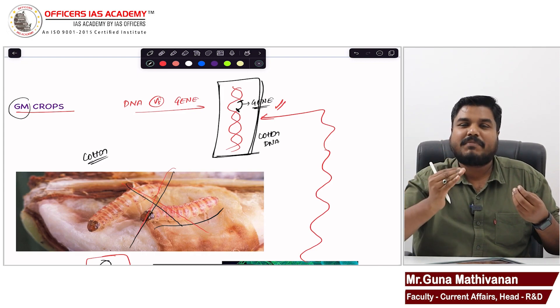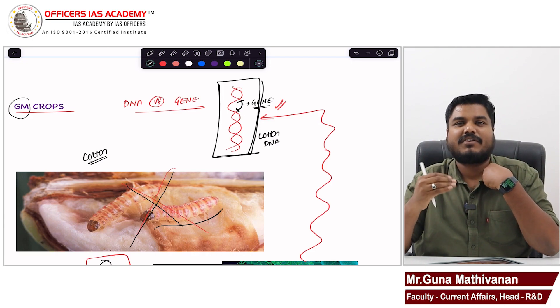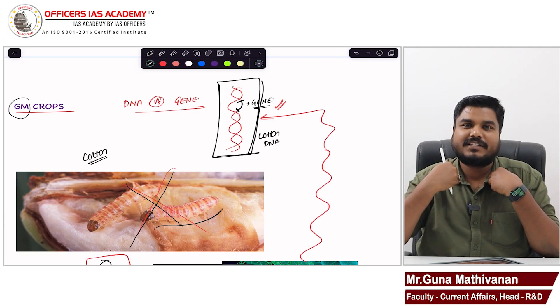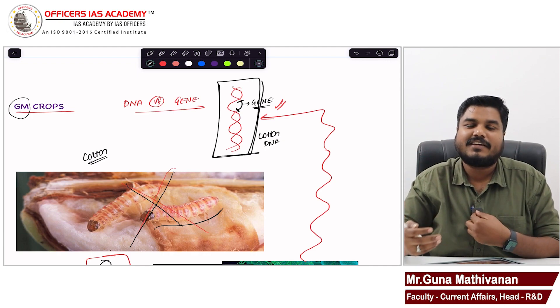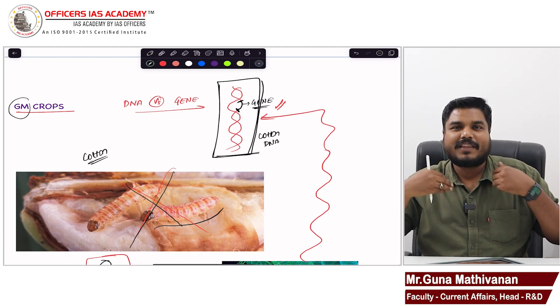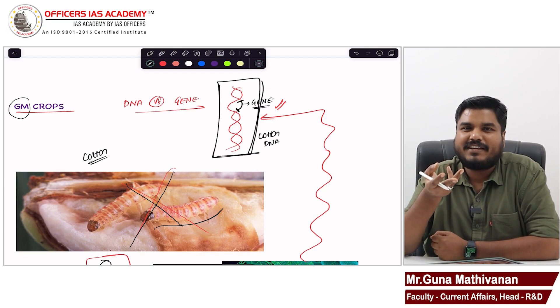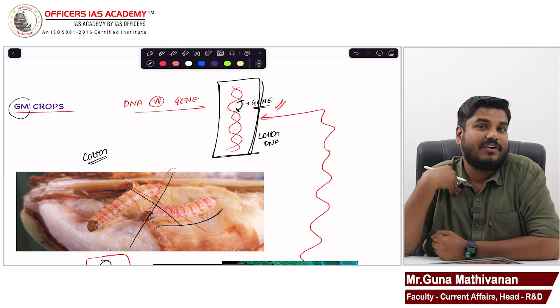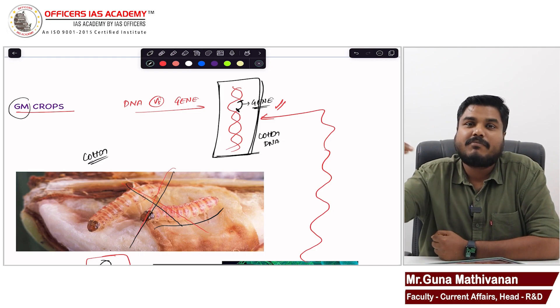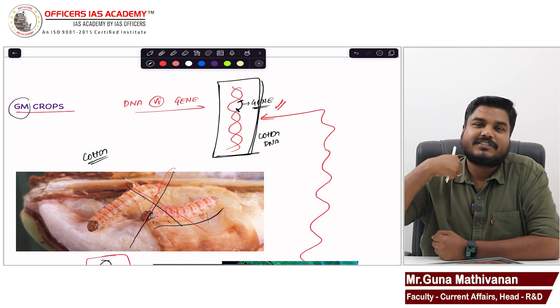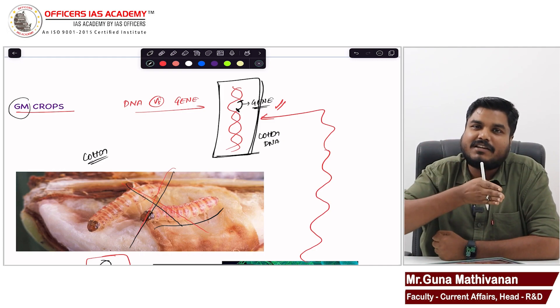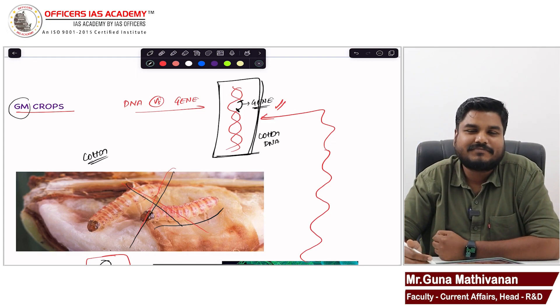So next time when the pink bollworm comes, if I am the cotton, the pink bollworm comes, it will take a U-turn and go back because the cotton has some poisonous substance. We are not going to eat cotton, so it is not going to have a problem for us. But when the pink bollworm comes, now this cotton has that poison, so the pink bollworm will take a U-turn.